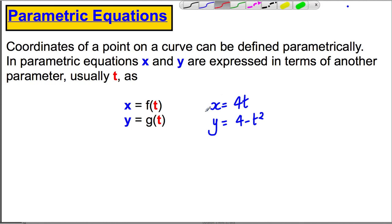You could substitute them in here. x would therefore be 4 times 0, which of course is 0, and y would be 4 subtract 0 squared, which is going to be 4. So given any time, you could work out the x and the y values.